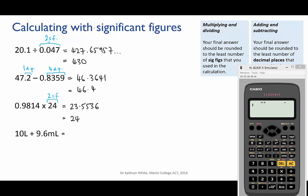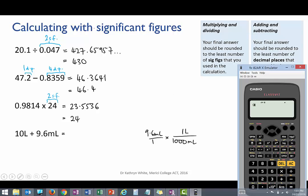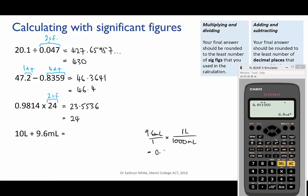We need to convert one of those values so that both of them have the same unit. I'm going to convert 9.6 mils to litres, and a quick conversion shows us that it's 0.0096 litres.